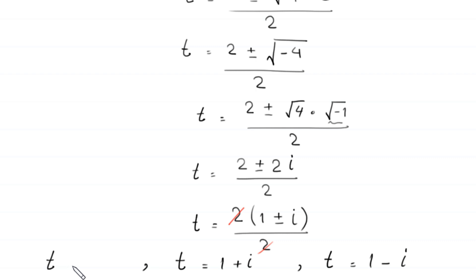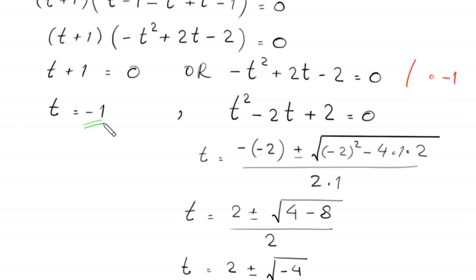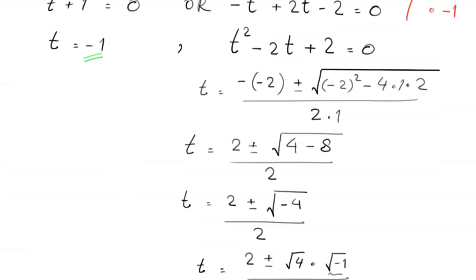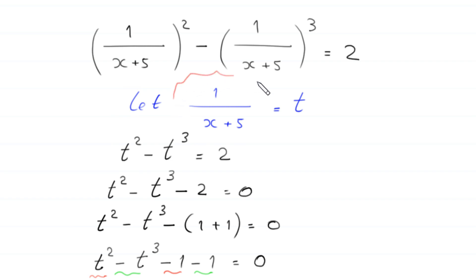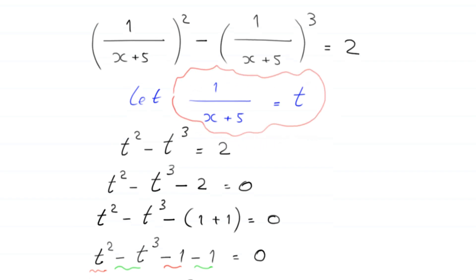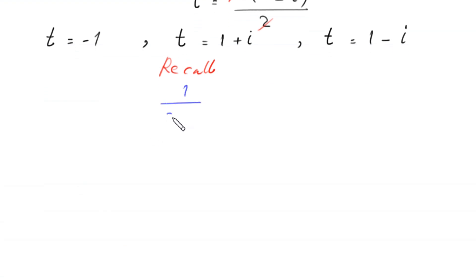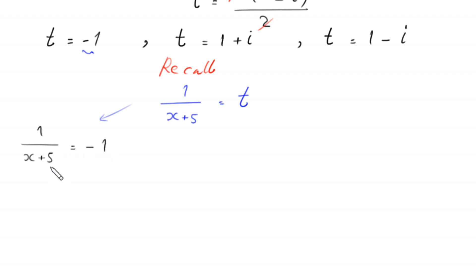We found t = −1, t = 1 + i, and t = 1 − i. To find the values of x, recall that we supposed 1 / (x + 5) = t. When t = −1, the equation becomes 1 / (x + 5) = −1. Taking reciprocals on both sides gives x + 5 = −1, so x = −6. This is the first solution.